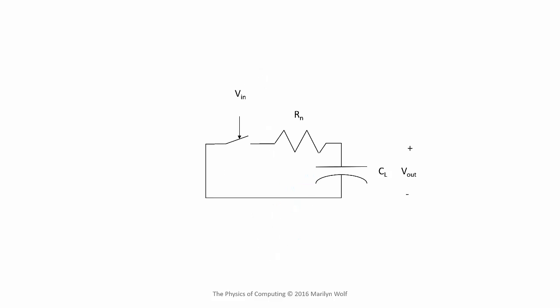Here's our circuit model. We have a switch determining when the circuit action starts, an effective resistance for the transistor, and the load capacitance. Now we can start to analyze the voltage waveforms.